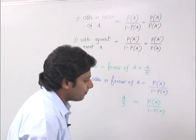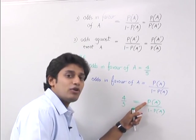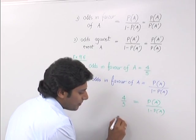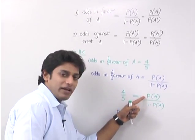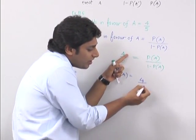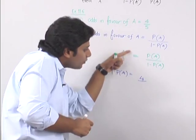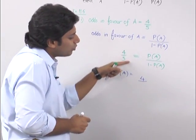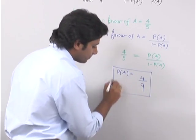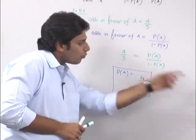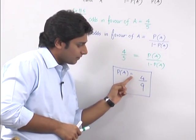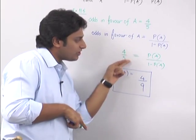What is a simple shortcut? I will say P of A. If it is P of A, connect it with this. It will be 4 upon the total. How much is the total? 4 plus 5 is 9. This is the shortcut. Connect with the total. P of A is 4 upon the total. The total is 9.